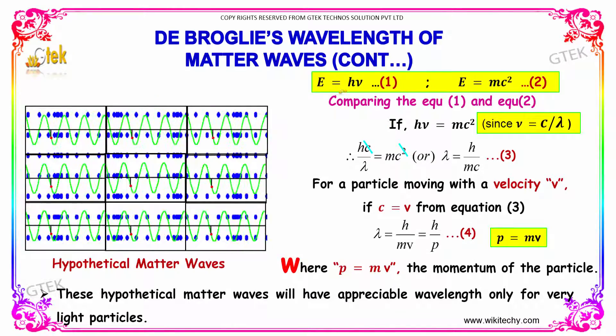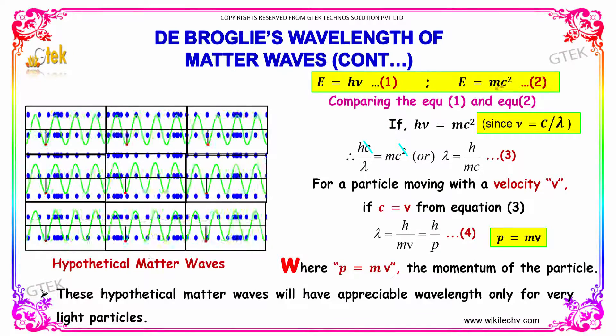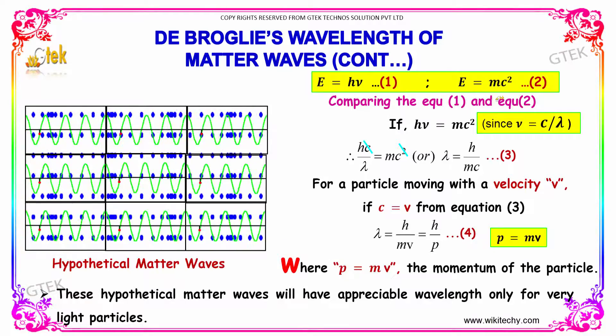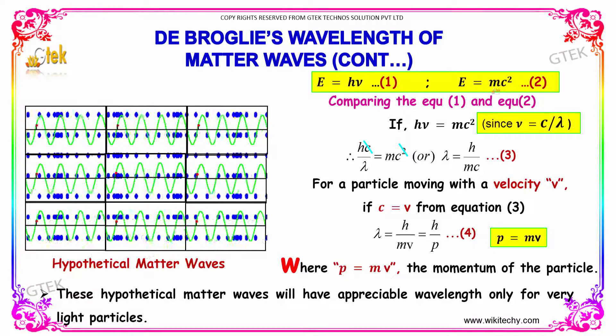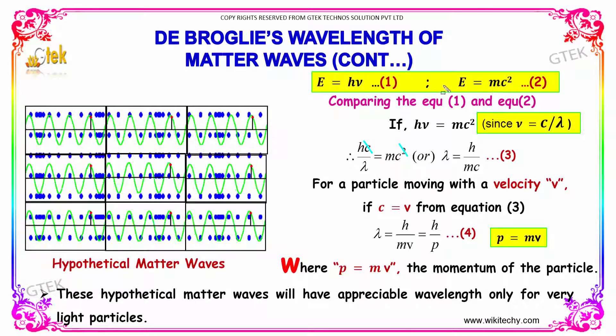We have two equations: Planck's equation E = hν and Einstein's equation E = mc². Equating these, hν = mc². When ν = c/λ, substituting and canceling c, we get λ = h/mc.